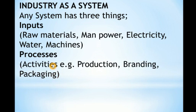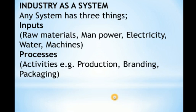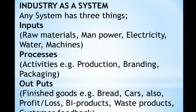Number two is processes, which involve a series of activities carried out in an industry to produce finished goods. Examples of such activities include production, branding, packaging, and in some industries, washing among other things. Every system also has outputs. In an industry, the most important outputs are finished goods — such as bread or cars. Other outputs include profit or loss, and byproducts.